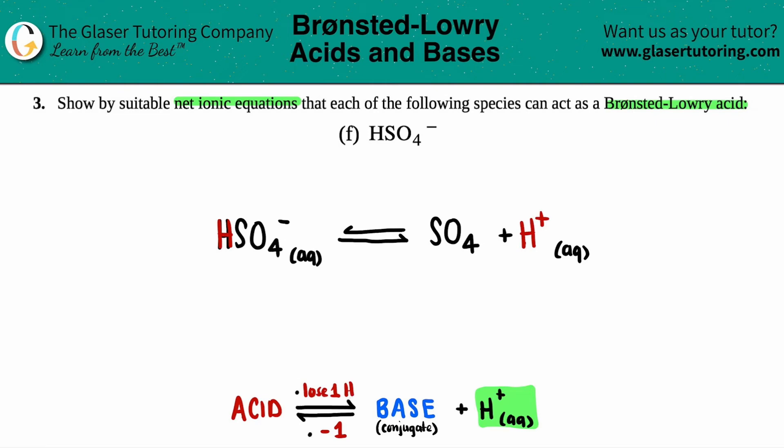But now because you lose one hydrogen, you always have to minus 1 from the original charge. And the original charge of HSO4 was a minus 1. So if I come over here, minus 1, minus 1 is negative 2, right? Negative 1 minus 1 is a negative 2.